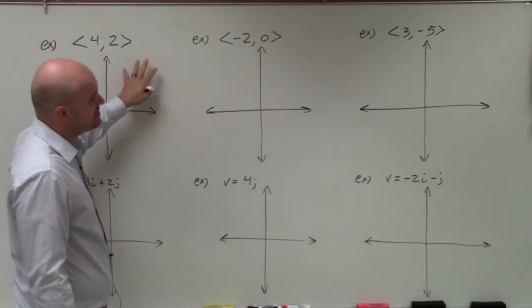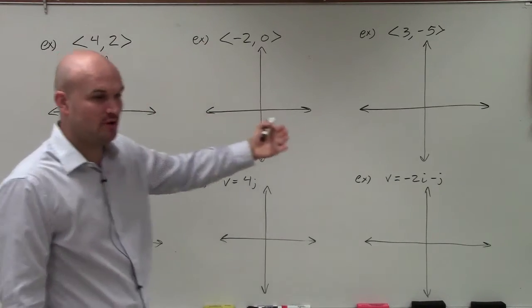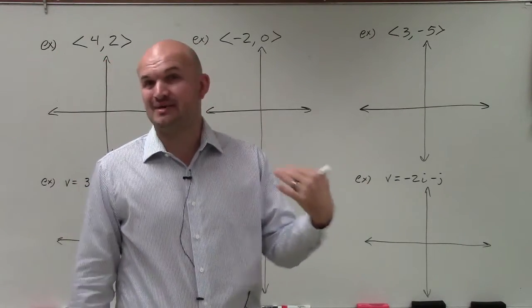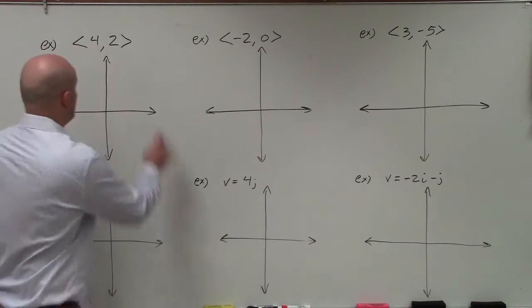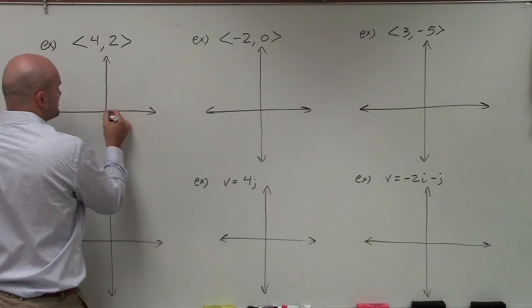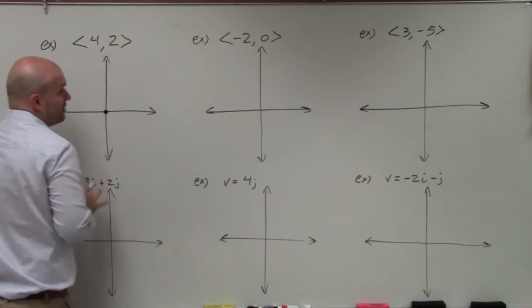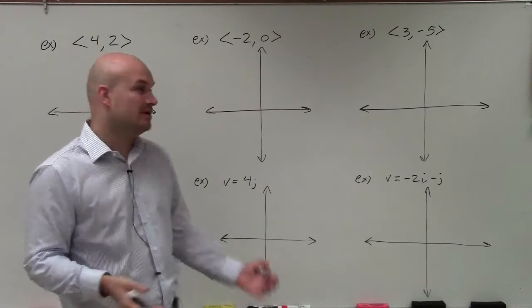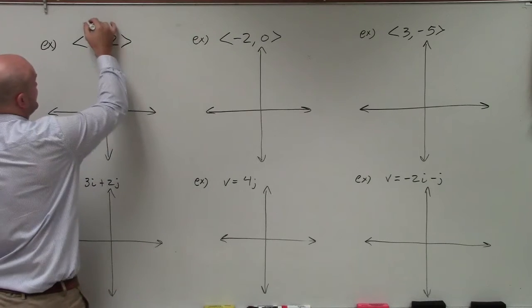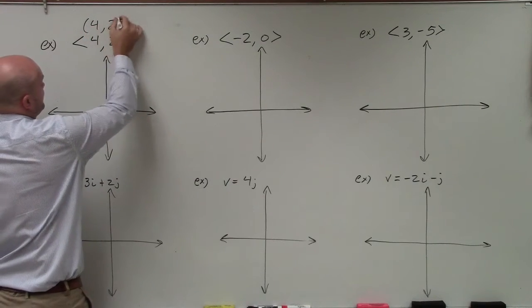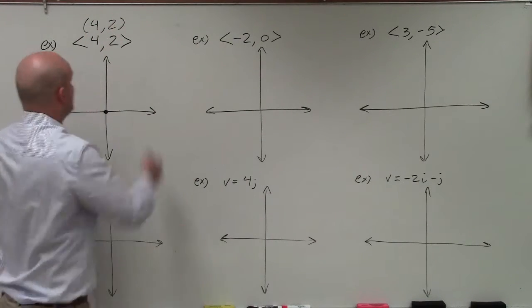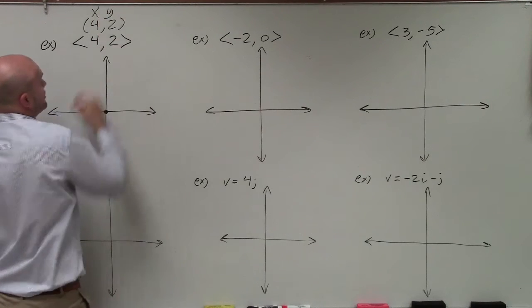When we're writing vectors in component form, what's nice is that the initial point is always going to be at (0,0). For instance, this vector (4,2) has an initial point at (0,0). The terminal point is going to be at the point (4,2). A lot of times people think of this when you're sketching vectors, you can think of this just like a coordinate point where you have your x and you have your y coordinate.